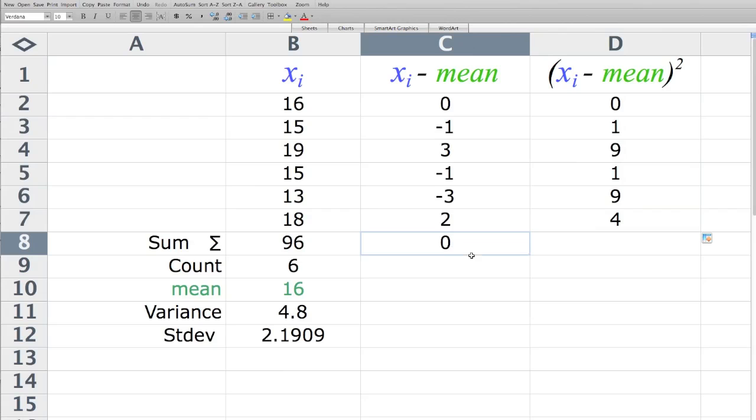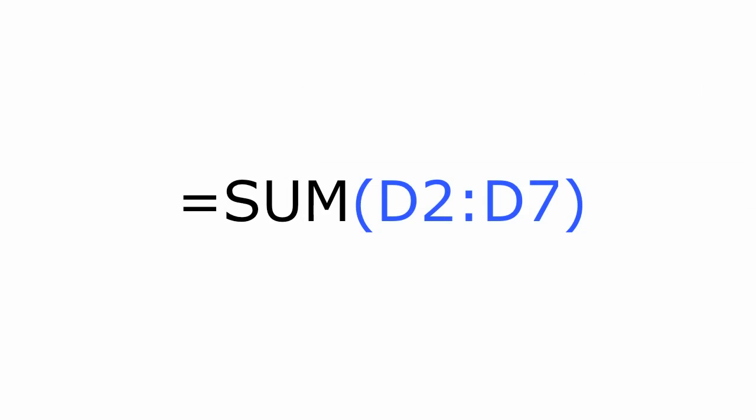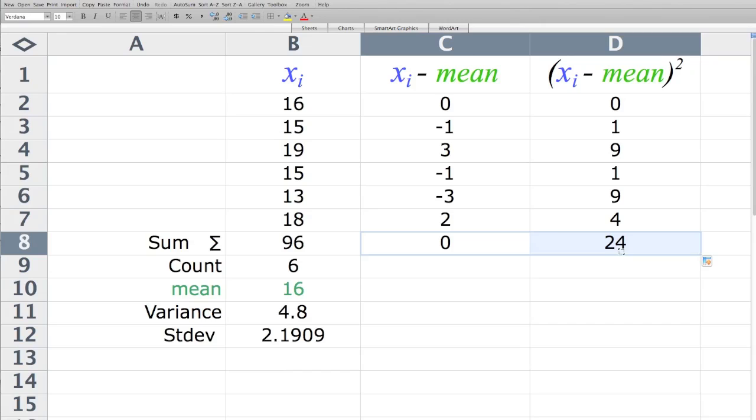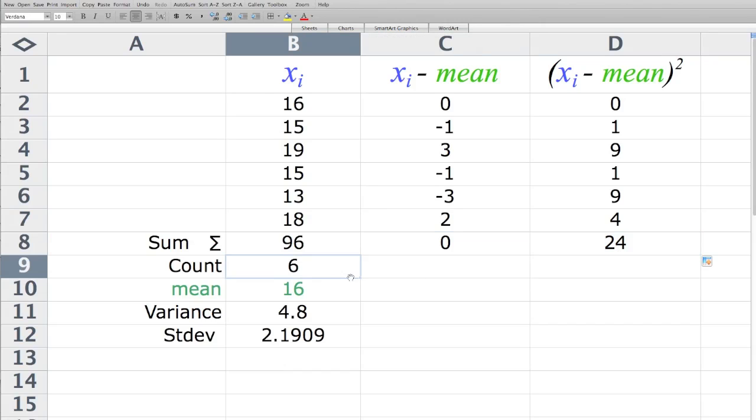I'll just drag the calculation to the right. Or you can type in the actual command. And for ease, I'm going to drag the count calculation to the right. It'll be six in each of the columns.